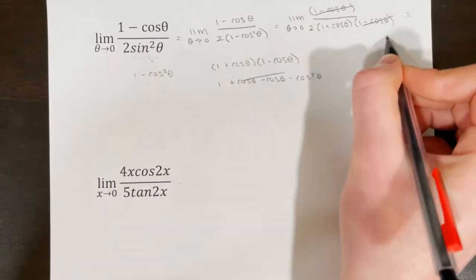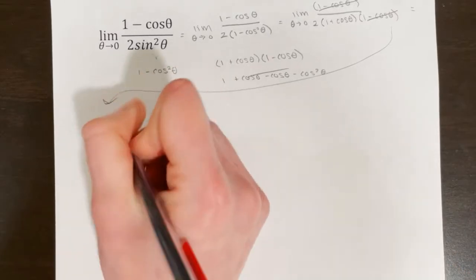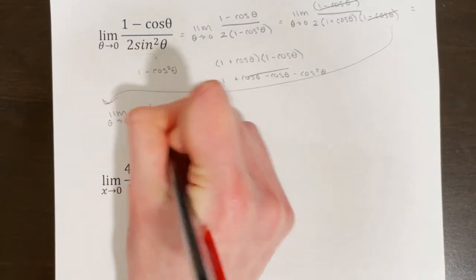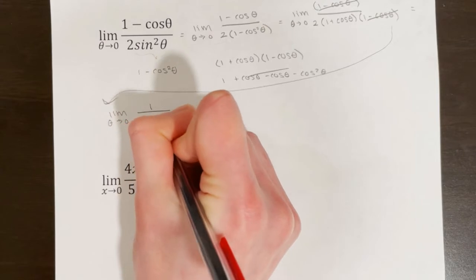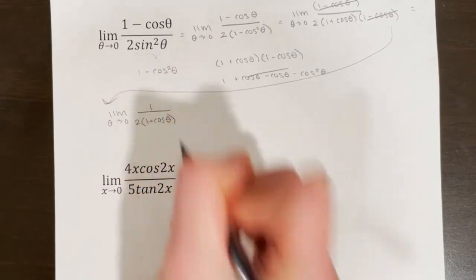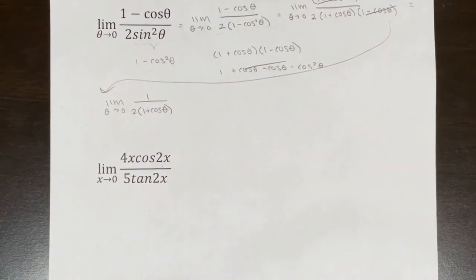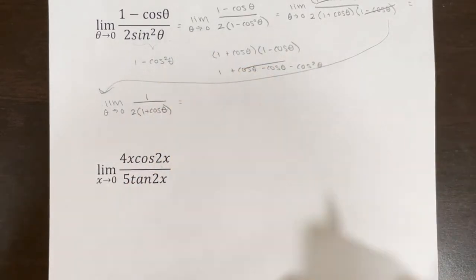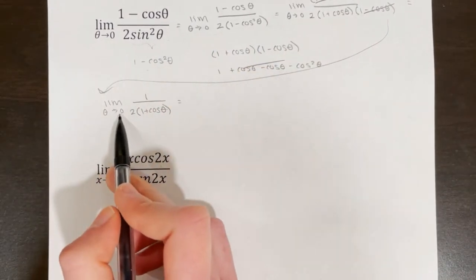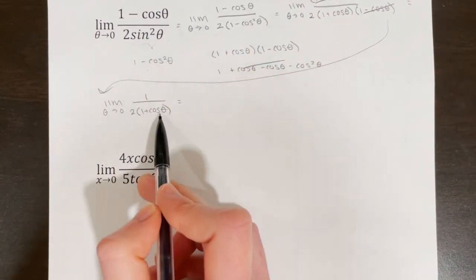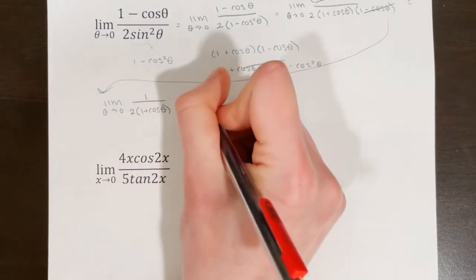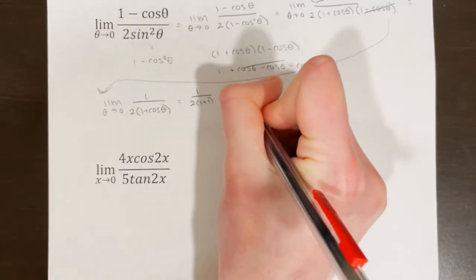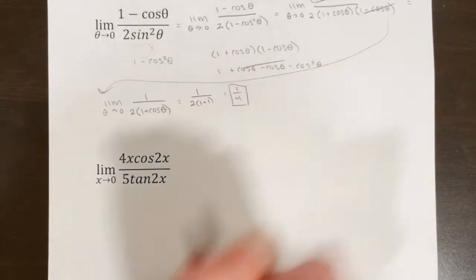I'm going to rewrite my limit as the limit as θ approaches 0 of 1 over 2(1 plus cosθ). At this point I'm going to use direct substitution. Cosine of 0 equals 1, so I get 1 over 2 times (1 plus 1), which is 1 over 4. And that's my limit.